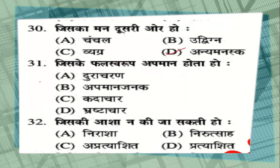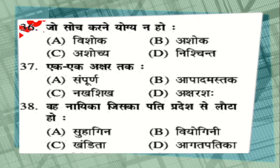Question number 31: जिसके फलस्वरूप अपमान होता हो — options: दुराचरण, अपमानजनक, कदाचार, या भ्रष्टाचार. The correct answer is अपमानजनक. Question number 32: जिसकी आशा न की जा सकती हो — options: निराशा, निरुत्साह, अप्रत्याशित, या प्रत्याशित. The correct answer is अप्रत्याशित. Question number 36: जो सोचने योग्य न हो — options: विशोक, अशोक, असोच्य, या निश्चिंत. The correct answer is option C, असोच्य. Question number 37: एक एक अक्षर तक — options: संपूर्ण, अपादमस्तक, नाक्षिक, या अक्षरशः. The correct answer is अक्षरशः — this is a very important question.